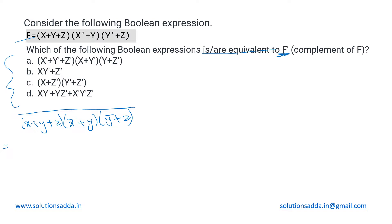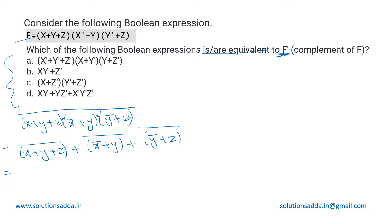We can simplify this using De Morgan's law — the complement will be distributed on all three terms and the AND will convert into OR. So what we get is (x + y + z) complement OR (x̄ + y) complement OR (ȳ + z) complement. Applying De Morgan's law on all three gives us x̄ȳz̄, plus x·ȳ (the double bar cancels, leaving x), plus yz̄.